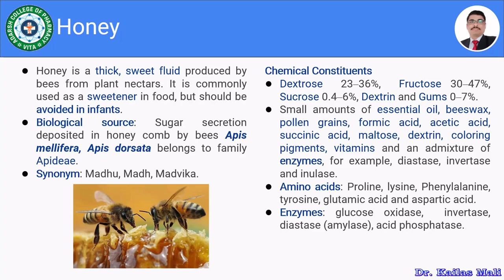The enzyme admixtures comprise diastase, invertase, and inulase. Furthermore, honey comprises amino acids like proline, lysine, phenylalanine, tyrosine, glutamic acid, and aspartic acid, and enzymes like glucose oxidase, invertase, diastase (amylase), and acid phosphatase.